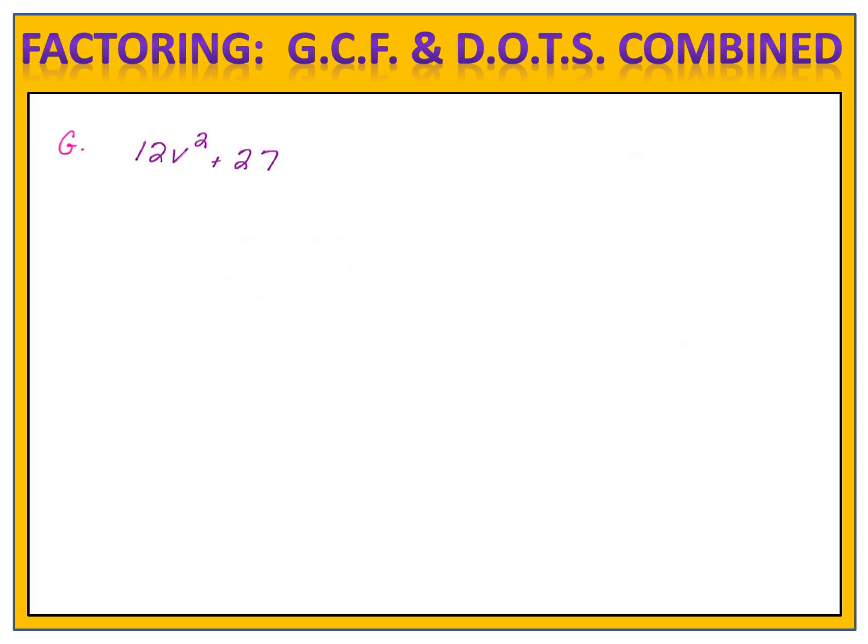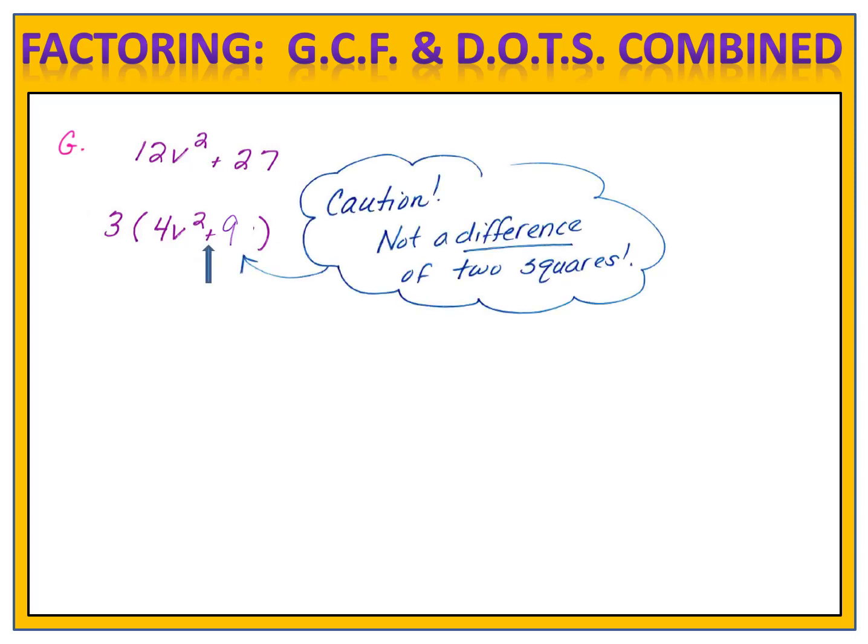Let's end today with one last example. Remember, you always have to be careful when you're working with perfect squares. In this case, we have 12v to the second plus 27. Of course, we factor out the common factor, and we end up with 4v squared plus 9. Be careful, this is not a difference of perfect squares. This is a sum. Therefore, we cannot factor this expression any further, and we take our answer, 3 times 4v squared plus 9.